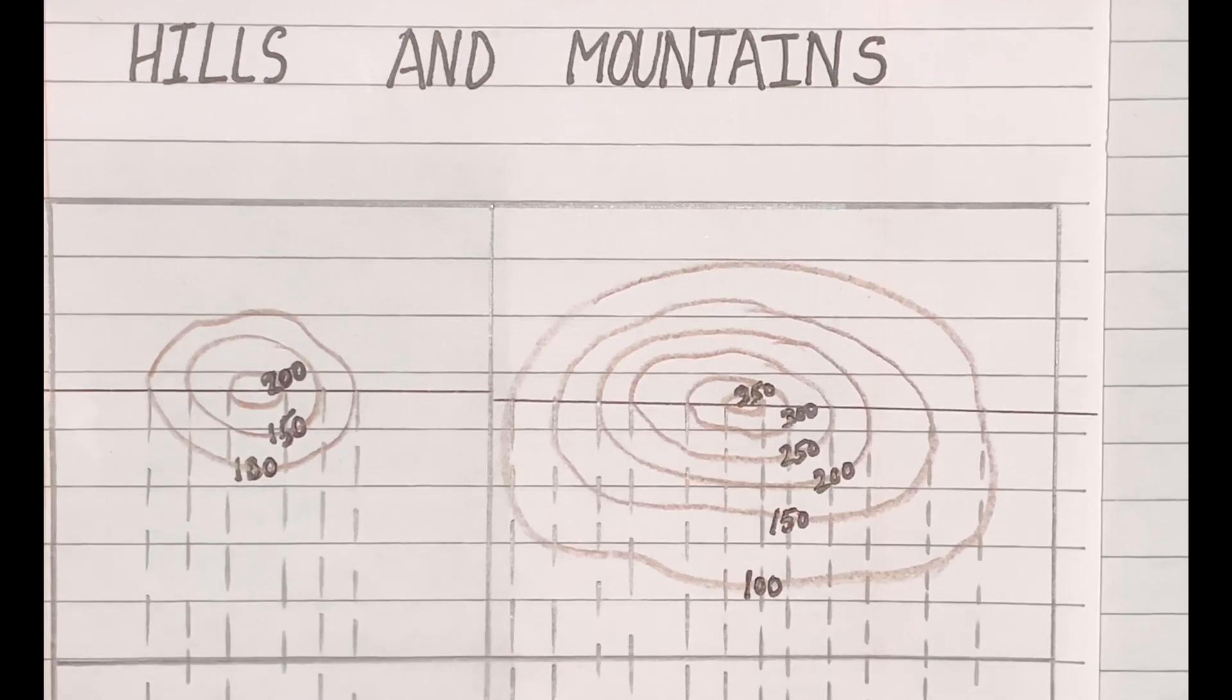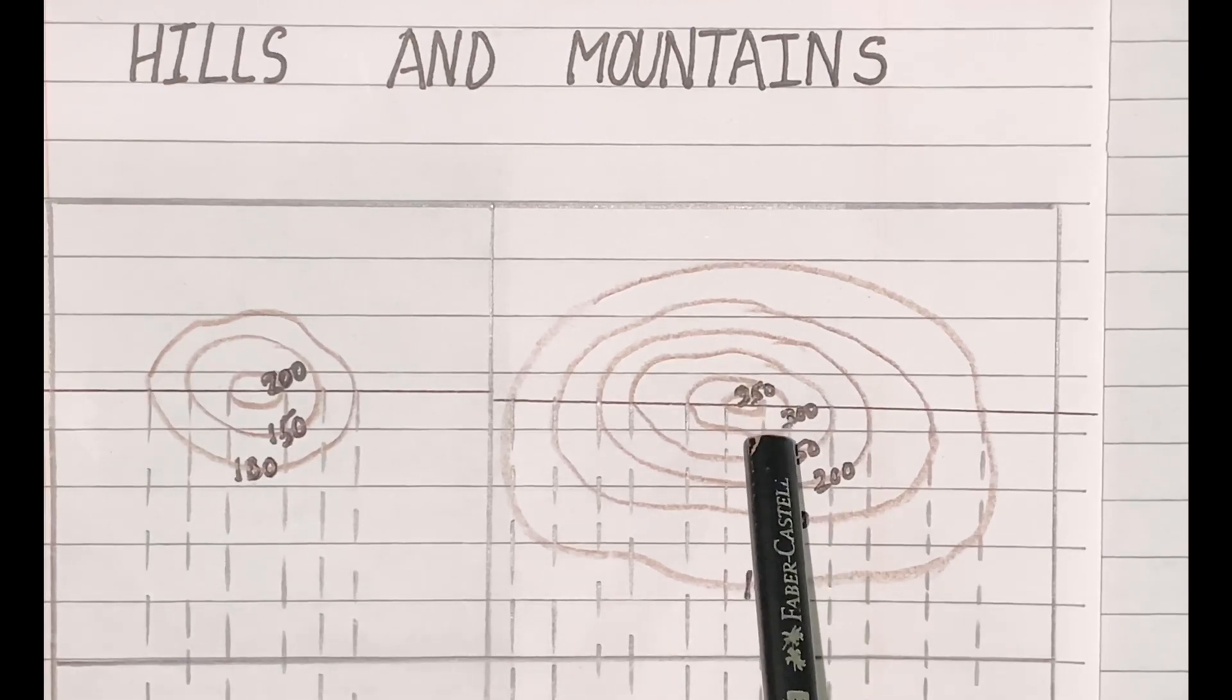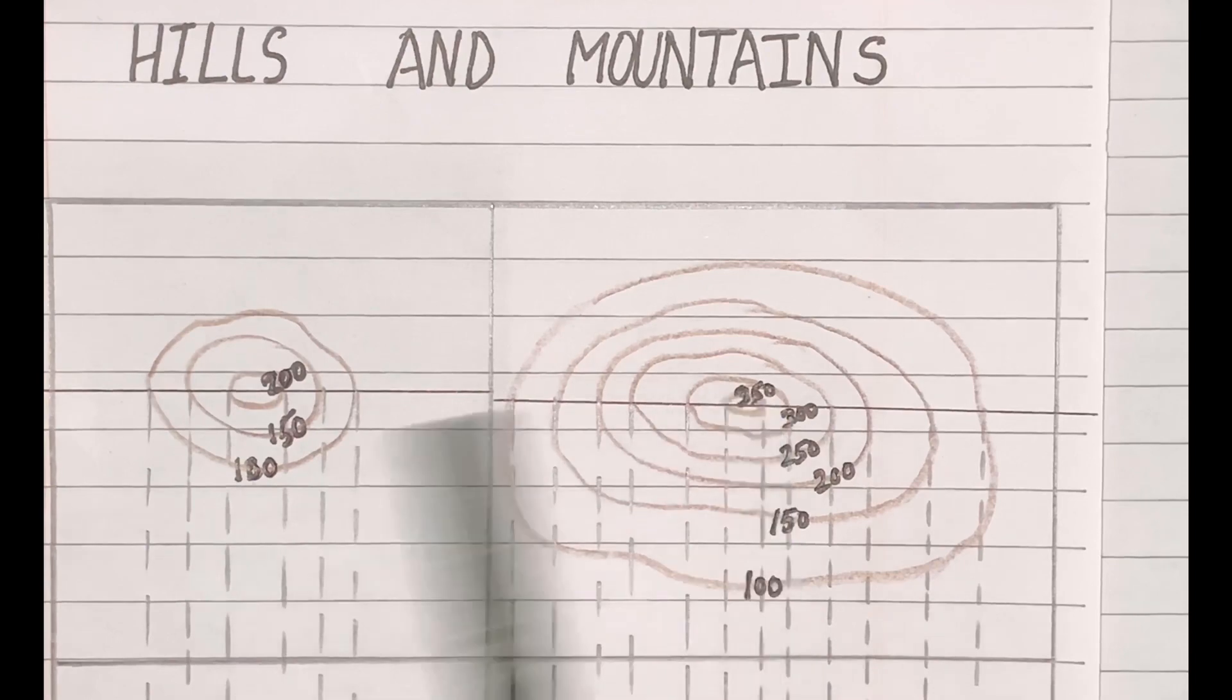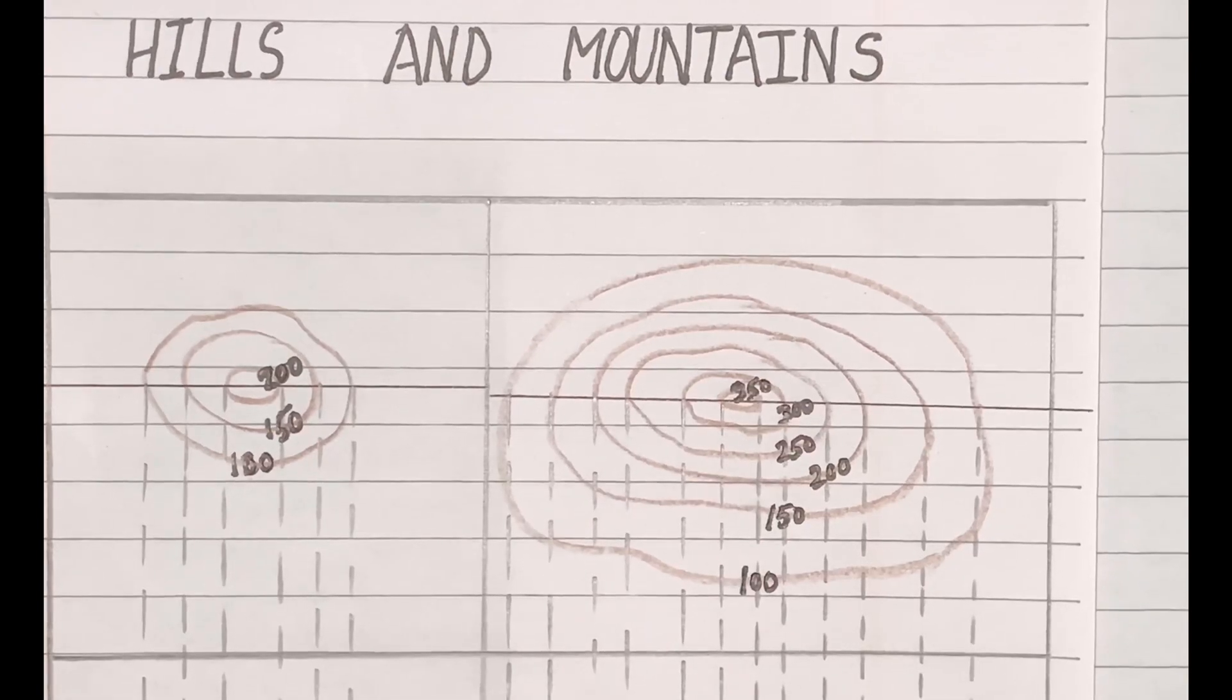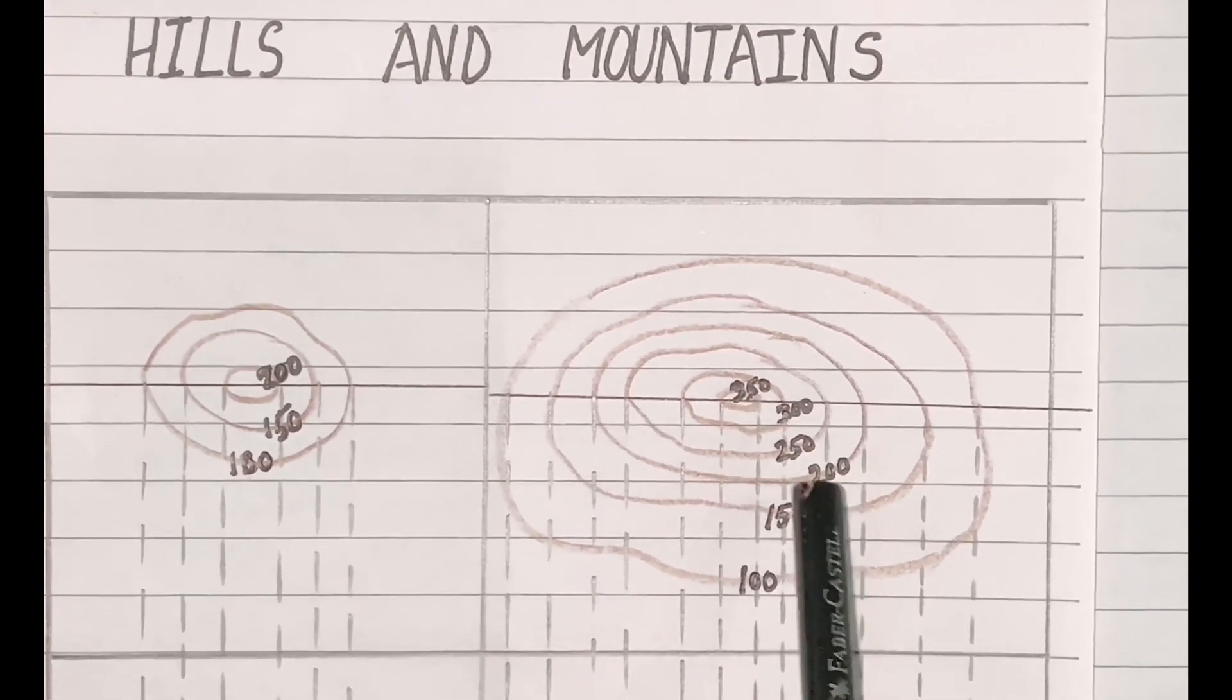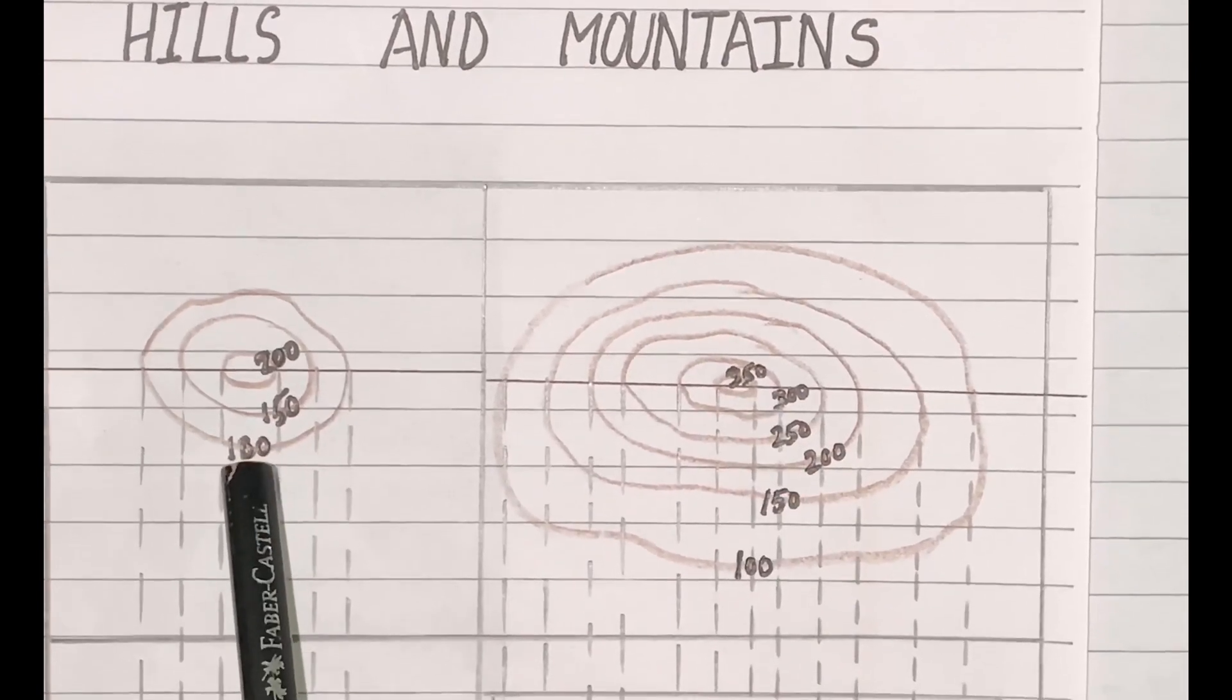This is a hill, but in the other one you will see it starts from 100, going to 150, 200 till it reaches its peak at 350 meters above sea level. From these two you can easily identify that this is a mountain with a peak, whereas this is a hill.